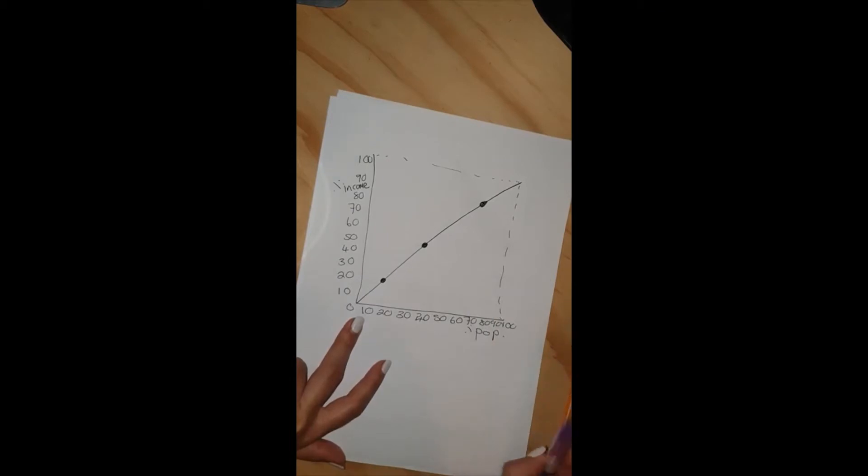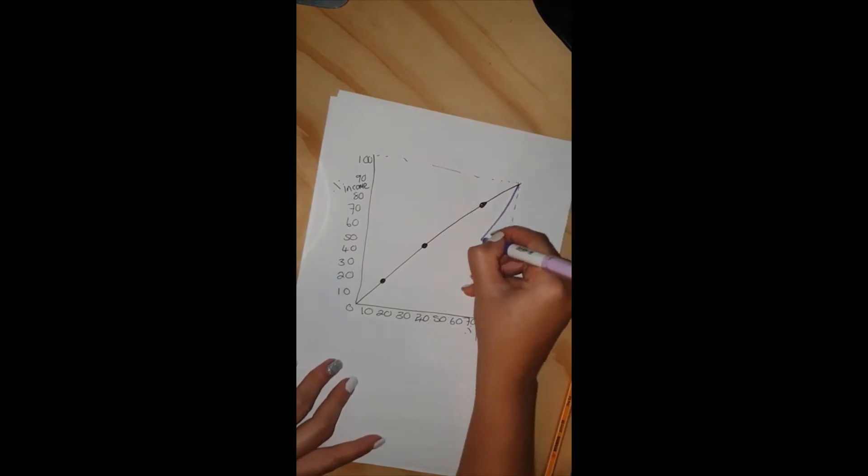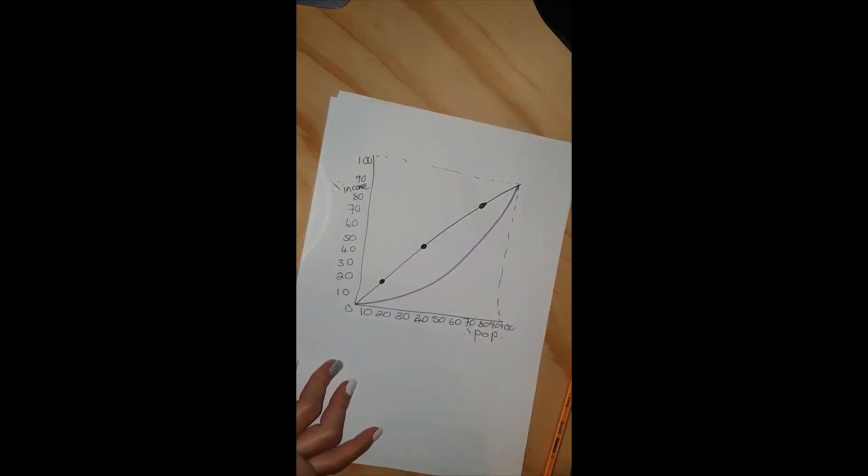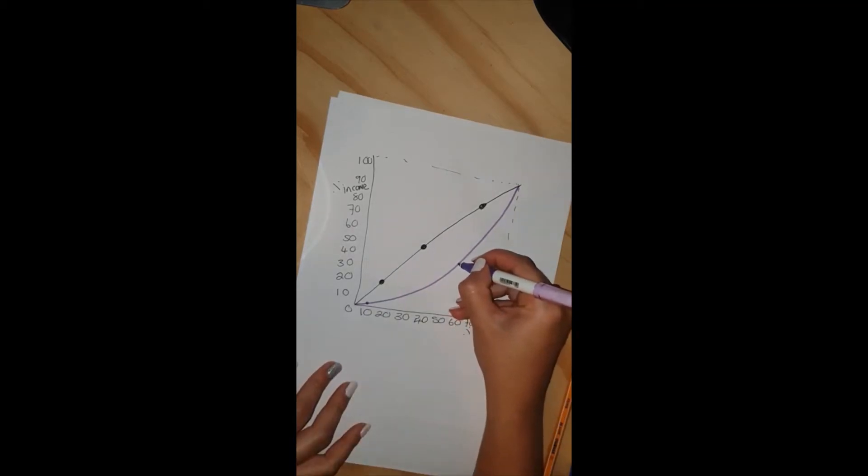You always have a measure of unequal distribution of income. It looks something like this. For instance, 10% of the population earns about 3% of the income. 60% of the population earns about 40% of the income.